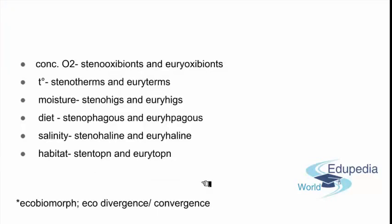These are examples of what species can be called depending on their tolerance for a specific factor. If they are strictly dependent on a concentration of oxygen, they would be called Steno-Oxibionts or Eury-Oxibionts. For temperature, it would be Stenotherms or Euryterms. Moisture is Steno-Hygric or Eury-Hygric. Diet would be Stenophagous or Euryphagous. Saline would be Stenohaline and Euryhaline. Habitat would be Stenotopic and Eurytopic.